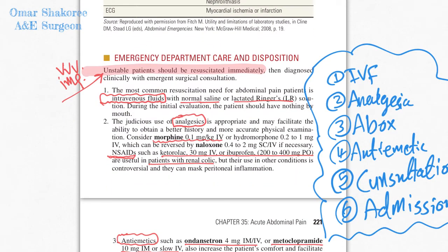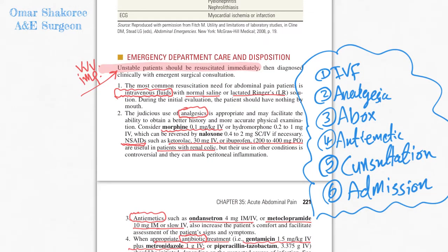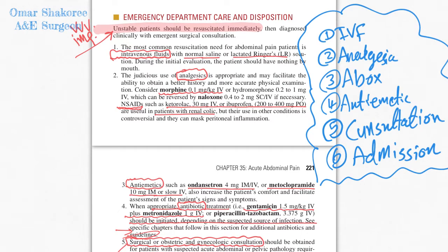Regarding treatment for those patients, it is very important to know how to treat a patient with acute abdominal pain in the emergency department. You have to give IV fluid, which is Ringer's lactate or normal saline. You have to give appropriate analgesia — usually we use morphine if available, and non-steroidal anti-inflammatories sometimes, like ibuprofen or ketorolac. Antibiotic also is important, and anti-emetics like ondansetron or metoclopramide.